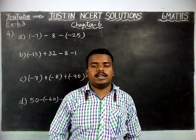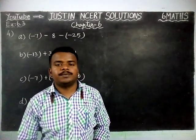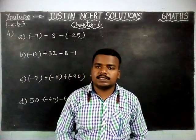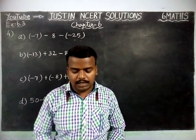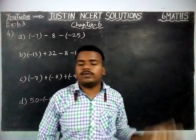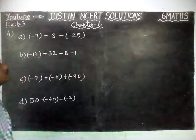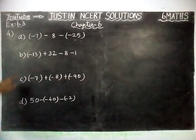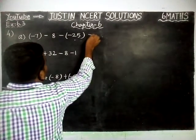Hi students, welcome to Justinian CRT Solutions. In this video, we are going to see Class 6 Maths Chapter 6 Exercise 6.3, 4th question. We have to find answers for the given integers. There are 4 parts: A, B, C and D. We are going to solve them one by one.